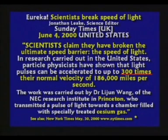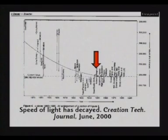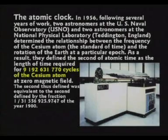Barry Setterfield, an Australian astronomer, did a lot of work on the speed of light question. He says the speed of light has decreased. In the last 300 years, at least 164 measurements of the speed of light have been published using 16 different methods. The speed of light has apparently decreased so rapidly that experimental error cannot explain it. A chart shows the speed of light declining over the last 150 years, leveling off around 1960, after which everyone gets 186,282 miles per second. That may be because in the late 50s and early 60s they began using the atomic clock, which uses the wavelength of a cesium-133 atom — meaning you're using light to measure light. You have a rubber ruler, so of course you won't see it declining.